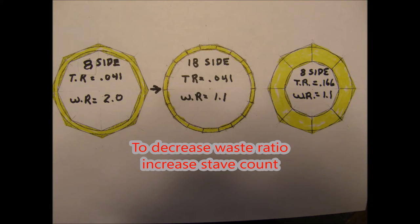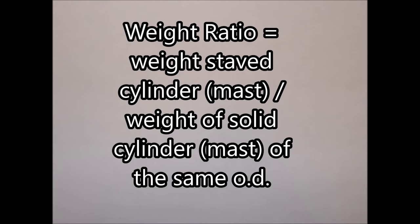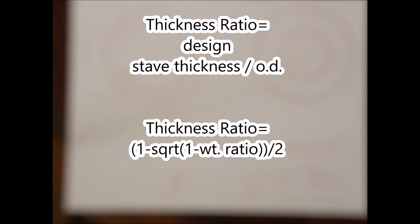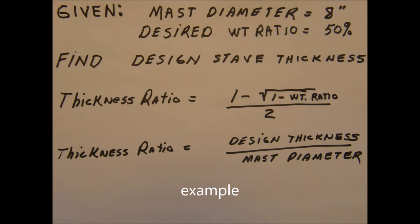Now let us examine the relationship between thickness ratio and weight. We will define the weight ratio as the weight of the staved cylinder divided by the weight of the solid cylinder of the same diameter. Using the definition of thickness ratio — the ratio of the design thickness divided by the cylinder diameter — and substituting and solving for thickness ratio, we develop the following formula. The thickness ratio is equal to 1 minus the square root of 1 minus the weight ratio, all divided by 2.